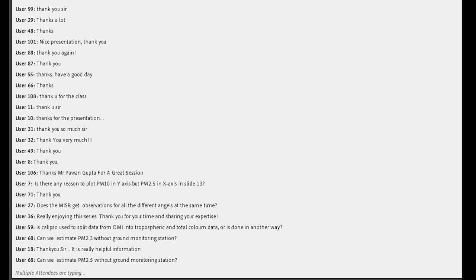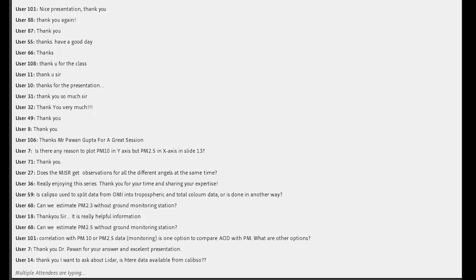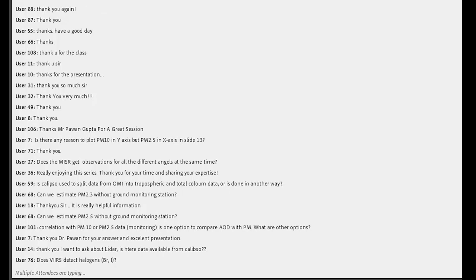Does MISR get observations for all different angles at the same time? This is a little tricky because it does get simultaneous measurements at all angles, but in order to cover the same area it does scan for different angles, which takes some time. That scanning time is not very large — I believe it's on the order of seconds, so within less than a minute it scans for all nine angles.